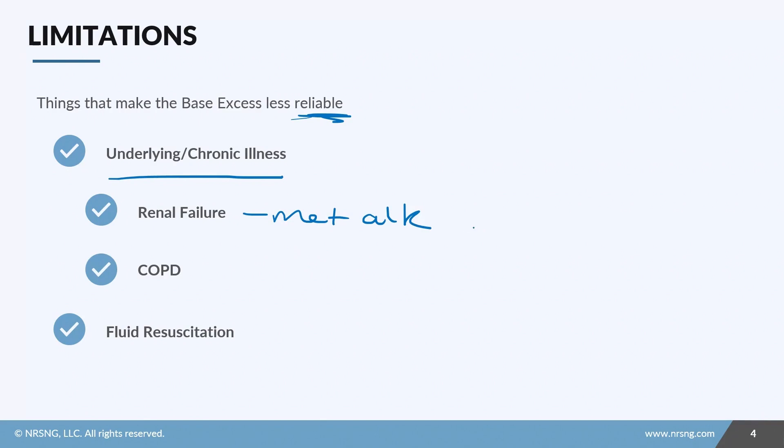They may have a super high base excess all the time, like they live at a base excess of six. Then you see their base excess come down and it's zero, and you think they're perfect. But actually they're clearly having some sort of acidotic process on top of their chronic alkalosis.